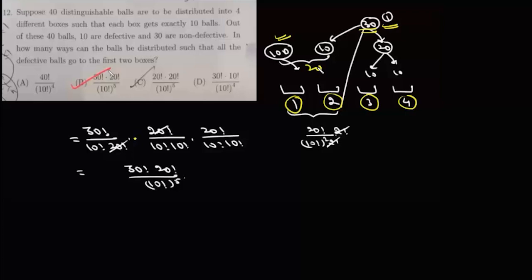So now we have 20 balls here and 20 balls here. Now these 20 balls are to be distributed in the two boxes, so you have to distribute them in a set of 10 and 10. It can be done in 20! upon 10! times 10!, and we have not divided it by 2! because these two boxes are distinct.